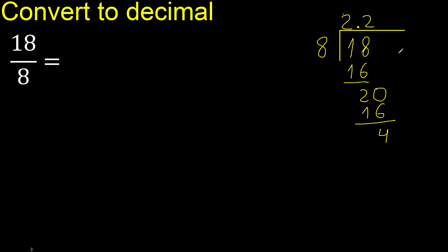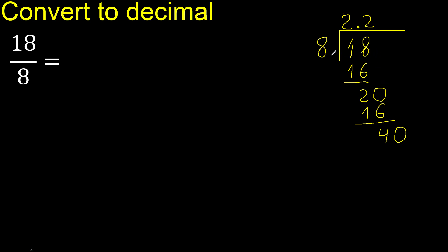Next. There is no number, therefore complete always with 0. Point is here. 8 multiplied by 5 is 40. Is not greater. 40 minus 40.